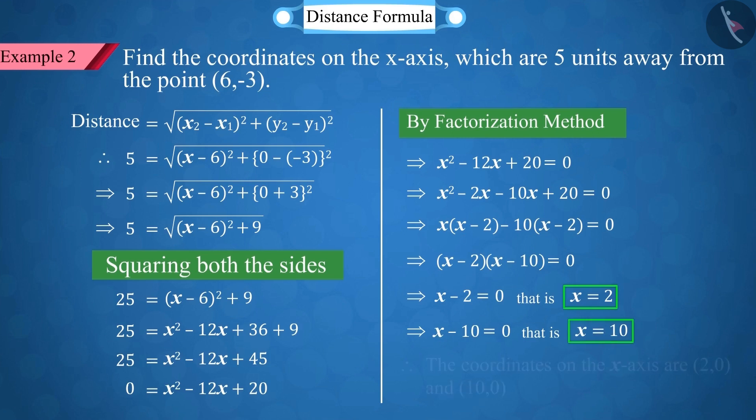So, we can say that there are two coordinates, (2, 0) and (10, 0), located on the x-axis.